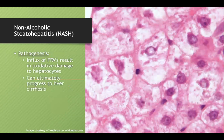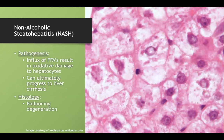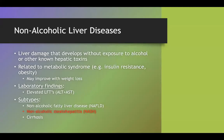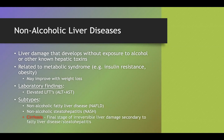NASH can progress to liver cirrhosis if the damage is severe or chronic enough. On histology, you'll see ballooning degeneration — cells that kind of look like tissue paper. Cirrhosis is the final stage here due to chronic inflammation and chronic free fatty acid deposition in the liver.